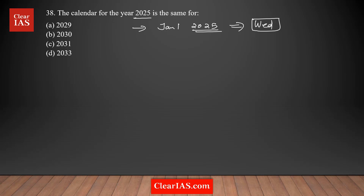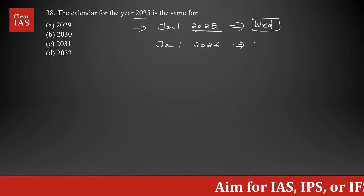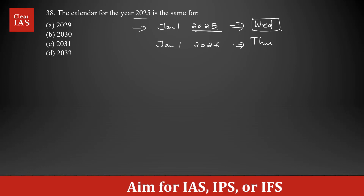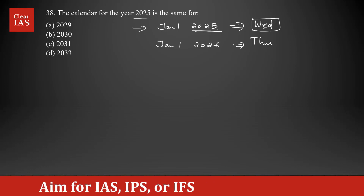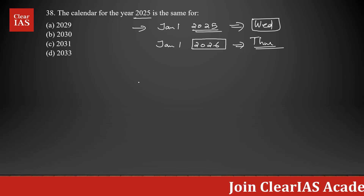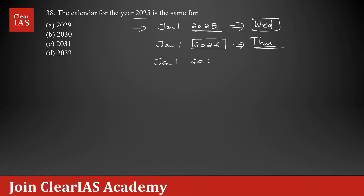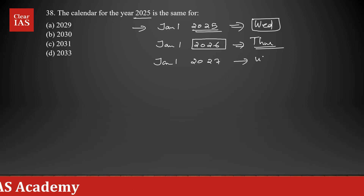If you remember the odd days concept in calendar problems, a regular year has one odd day. That means Jan 1st 2026 will be on Thursday — the day shifts one day forward. Again, 2026 is also a regular year, not a leap year, so Jan 1st 2027 will be Wednesday — one day after Thursday. Similarly, 2027 is also a regular year.